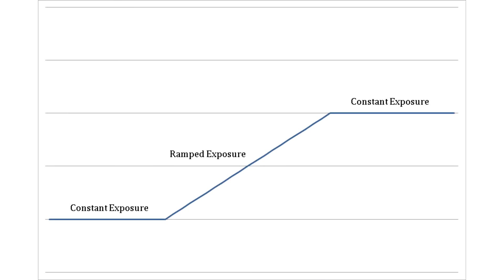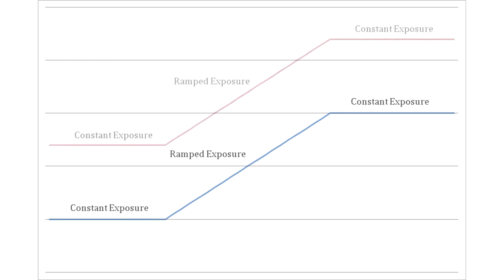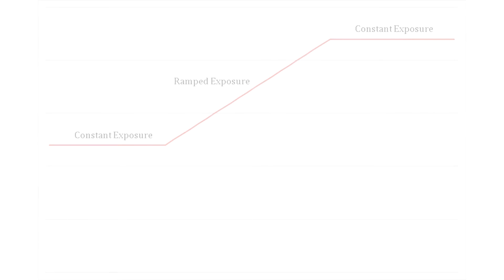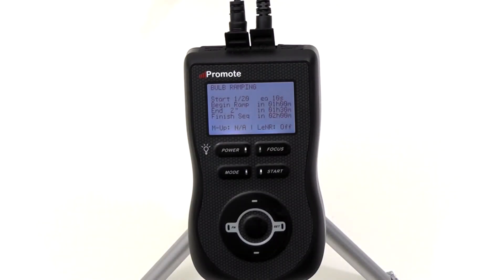When you apply a Live Modification, the whole set of exposures is shifted, including constant zones. If you were to apply a Live Mod in the very beginning of your sequence, it would slowly go from the original curve to the modified curve. The change will not be applied at once — this would result in an unpleasant flicker in your final time-lapse video. Instead, the Promote Control will automatically and gradually apply the change across a number of frames so that in the final video, this change looks like a smooth transition.